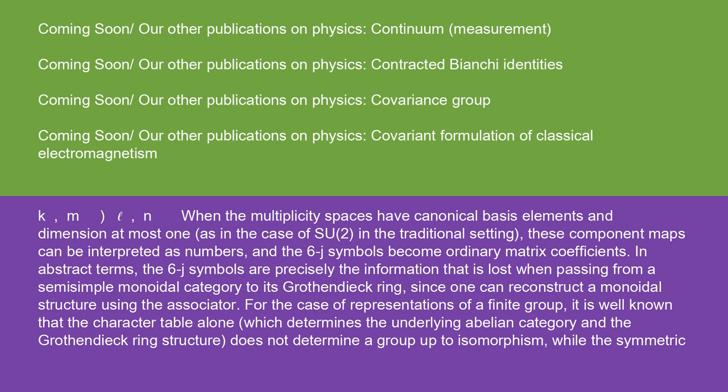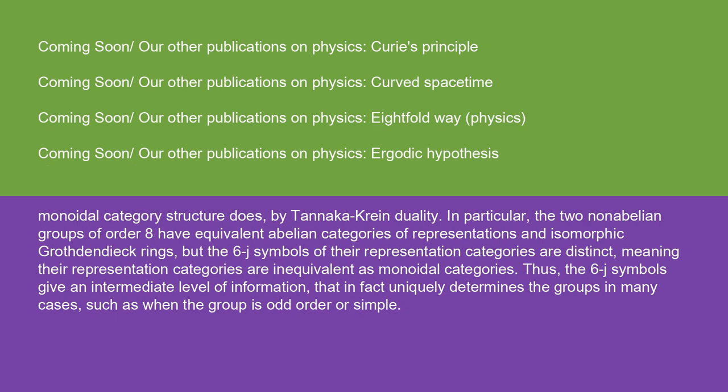And the 6J symbols are defined as the component maps IJKℓMN equals φIJ. In abstract terms, the 6J symbols are precisely the information that is lost when passing from a semisimple monoidal category to its Grothendieck ring, since one can reconstruct a monoidal structure using the associator. For the case of representations of a finite group, it is well known that the character table alone, which determines the underlying abelian category and the Grothendieck ring structure, does not determine a group up to isomorphism, while the symmetric monoidal category structure does, by Tannaka-Krein duality. In particular, the two non-abelian groups of order 8 have equivalent abelian categories of representations and isomorphic Grothendieck rings, but the 6J symbols of their representation categories are distinct, meaning their representation categories are inequivalent as monoidal categories.